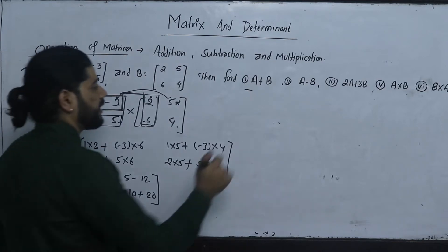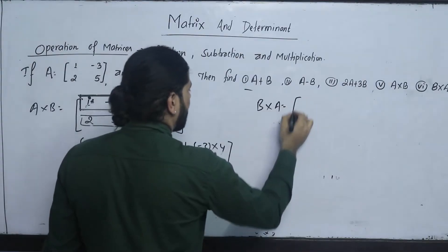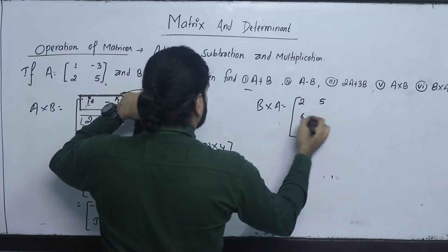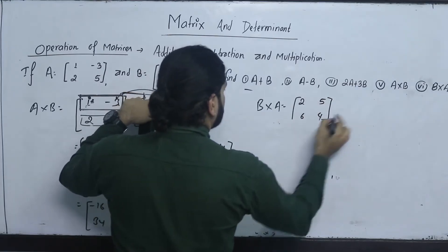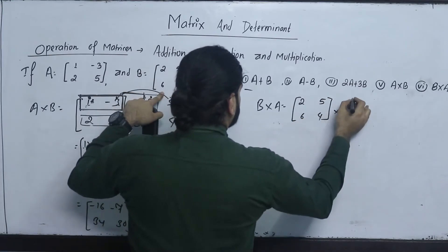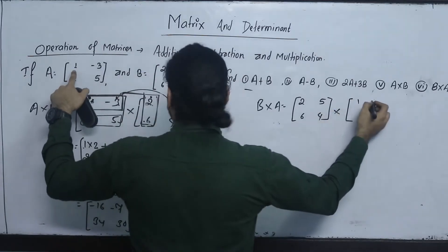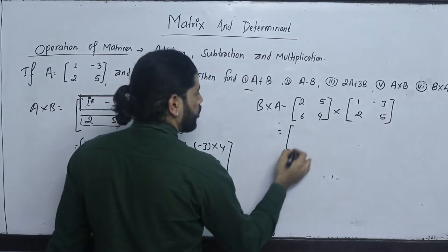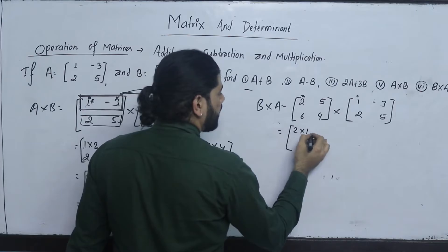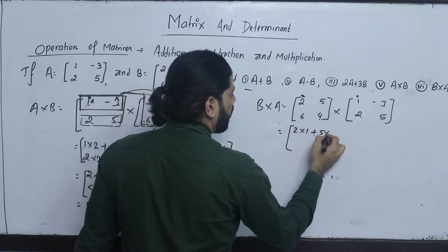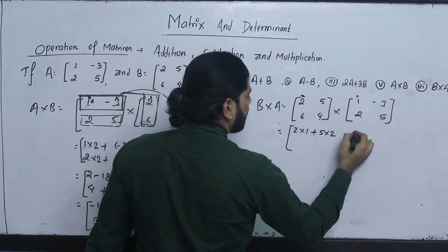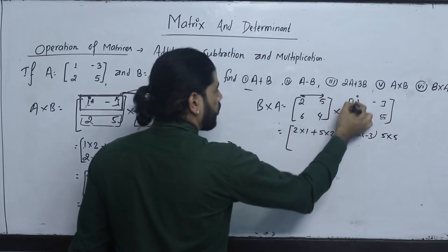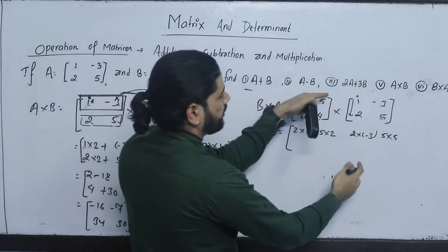Now computing B into A. Matrix B is 2, 5, 6, 4, and matrix A is 1, minus 3, 2, 5. For B into A: 2 into 1 plus 5 into 2, then 2 into minus 3 plus 5 into 5. This row, this column — first row first column, first row second column. Second row first column: 6 into 1 plus 4 into 2. Second row second column: 6 into minus 3 plus 4 into 5.